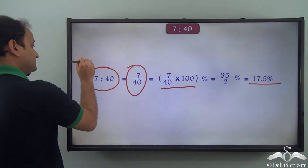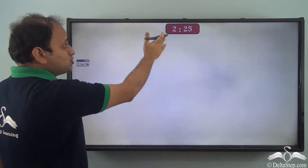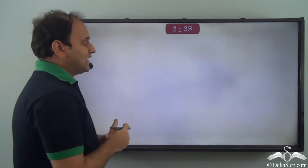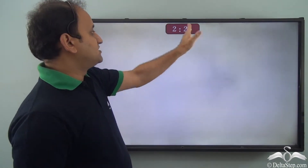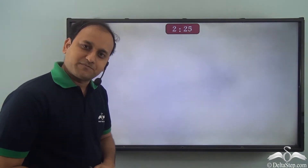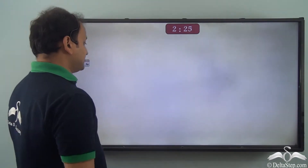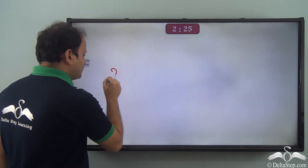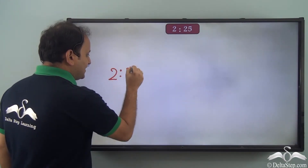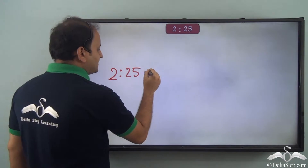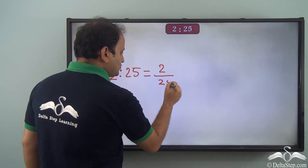Now we have another question here. We have a ratio 2 is to 25. What will be the percentage for this particular ratio? We have to solve it using the same principle — when we talk about 2 is to 25, we can write it as 2 by 25.